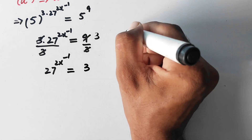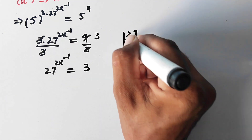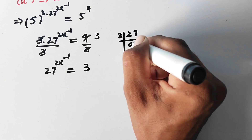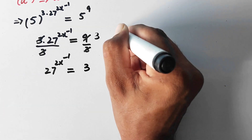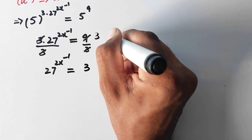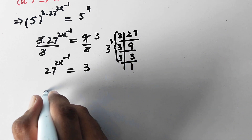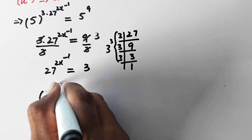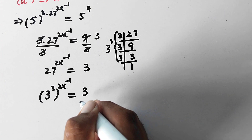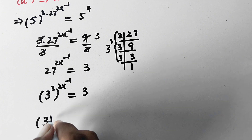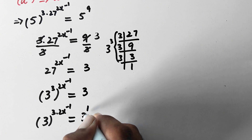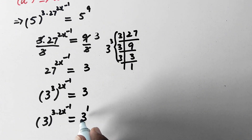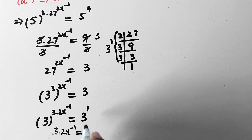Now we will factorize 27. We can write 27 as 3 raised to power 3. So we can write 3 power 3 raised to power 2x minus 1 is equal to 3 power 1, since 3 is the same as 3 power 1. Here again the base is the same, so we can compare the powers and write 3 times 2x minus 1 is equal to 1.